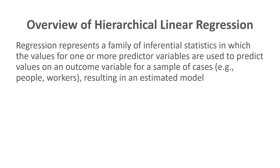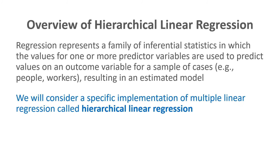Regression represents a family of inferential statistics in which the values for one or more predictor variables are used to predict values on an outcome variable for a sample of cases, such as people, workers, etc. This results in what we call an estimated model. Multiple linear regression involves two or more predictor variables and a single outcome variable. We're going to focus on a specific application of multiple linear regression called hierarchical linear regression.